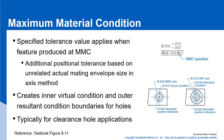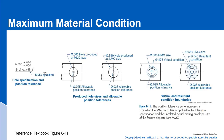Maximum material condition: the specified tolerance value applies when a feature is produced at MMC. It creates an inner virtual condition and an outer resultant condition boundary for holes, and it's typically used for clearance. When we make the hole at the MMC condition at 500 thousandths, that gives a minimum tolerance of 25 thousandths allowable true position. But if we manufacture that hole up to 510 thousandths, we get an extra 10 thousandths positional tolerance as bonus — because in GD&T with MMC you're trying to ensure parts are going to fit.